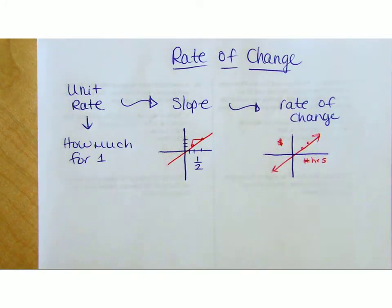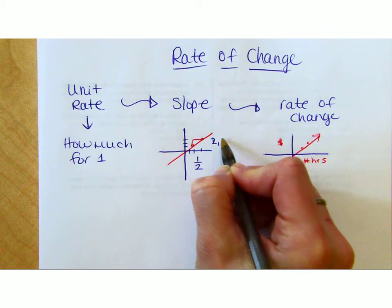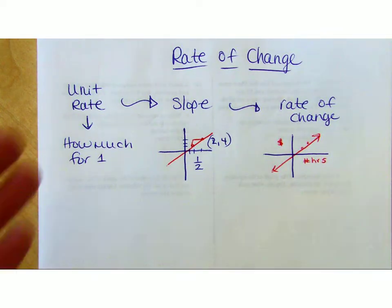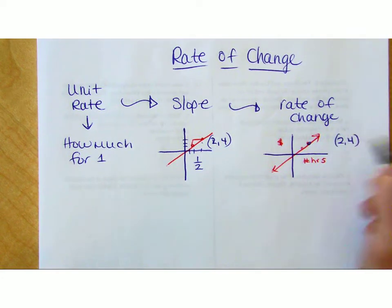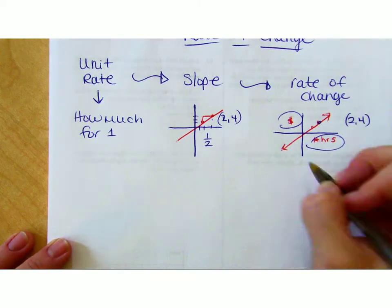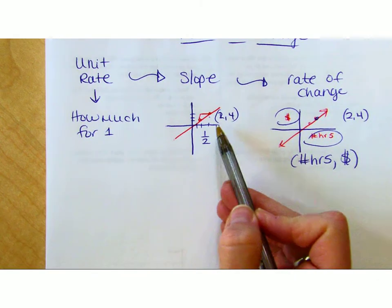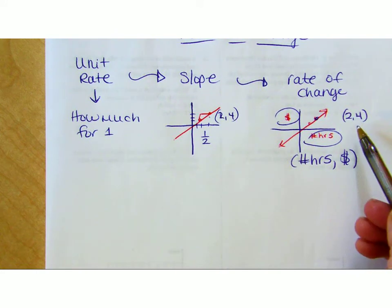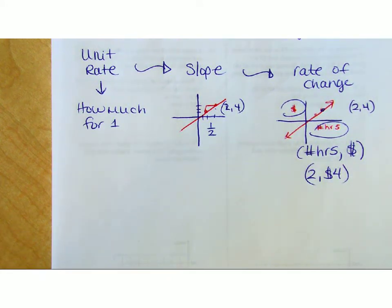So over here, this point right here, two comma four means nothing to you. That's what the name of that point is. Here, point two comma four actually takes on meaning because of these words right here. So you mean my x-axis is my number of hours and my y-axis is cost? So the point two four here meant nothing, but the point two four here means that for two hours, it cost me four dollars for something. So rate of change is basically slope in the application problem type.